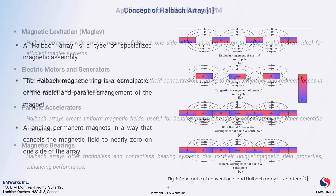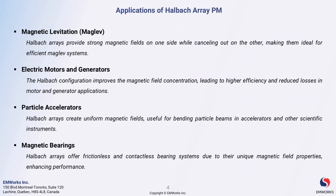Let's explore some exciting applications of halbach array permanent magnets. First up is magnetic levitation, or maglev. Halbach arrays are particularly suited for maglev systems because they provide strong magnetic fields on one side while effectively canceling them on the other. This feature leads to highly efficient levitation, minimizing friction and allowing for smooth and fast transportation.